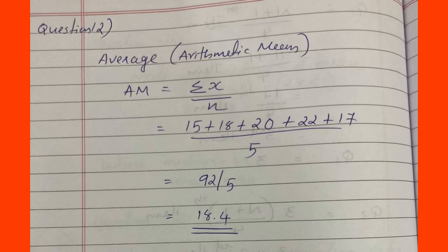We apply the values: sigma x = 15 + 18 + 20 + 22 + 17 = 92, divided by n = 5. So 92 divided by 5 = 18.4. The average speed is 18.4 km per hour.